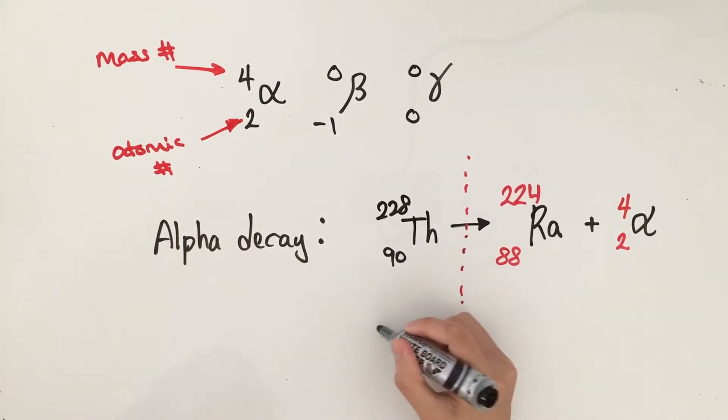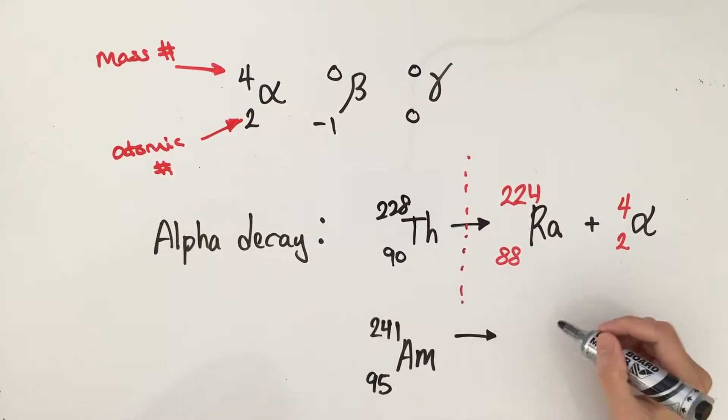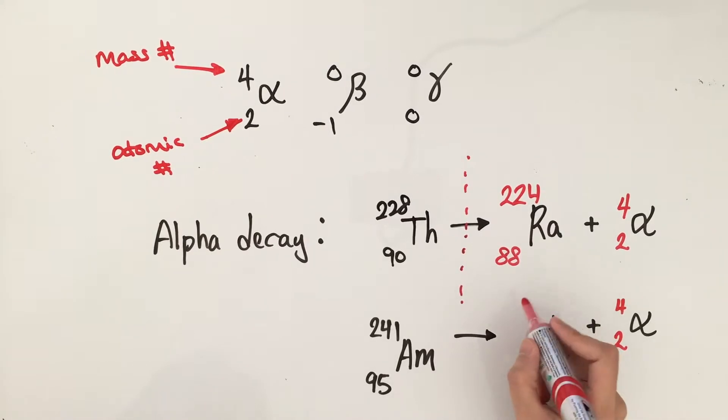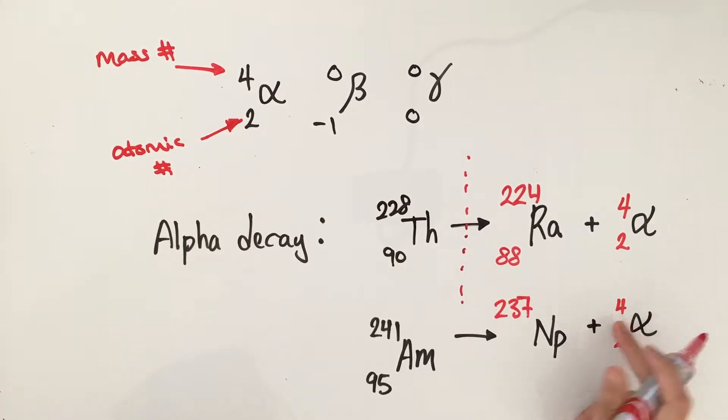Let's try another example, americium. It decays into neptunium via alpha decay. Just like before, we write down the mass number and atomic number for alpha first. We need to add 237 to 4 in order to total 241. We do the same for the atomic number. 93 plus 2 gives us 95. Now both sides of the equation are equal.